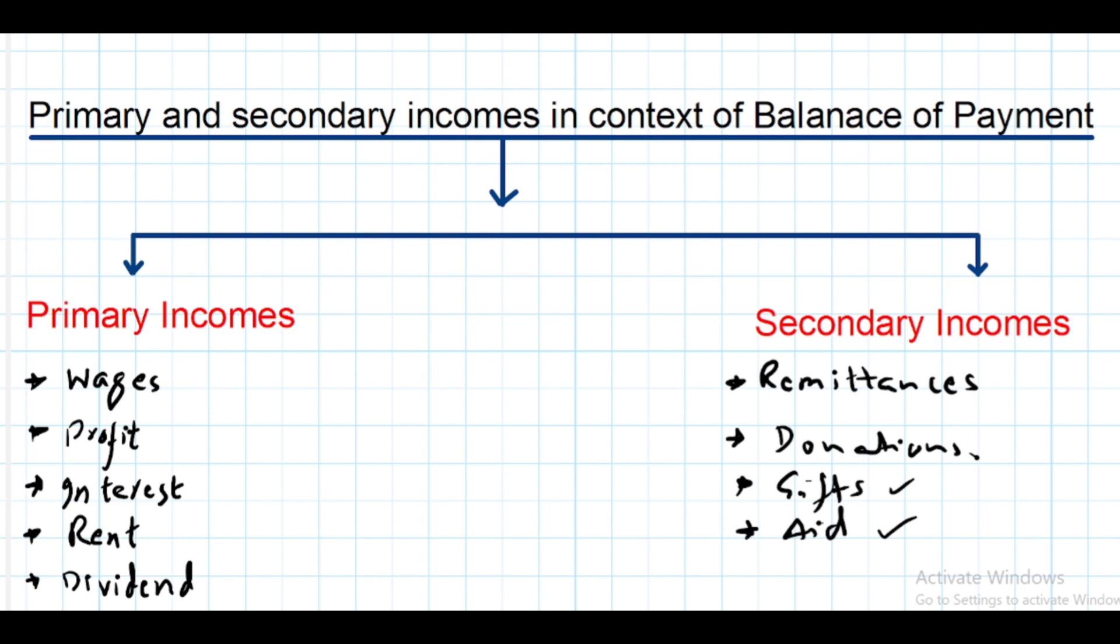Donations are also part of secondary income. For example, in case of flood in Pakistan, many donations were sent by different countries to Pakistan. That is also secondary income for Pakistan.